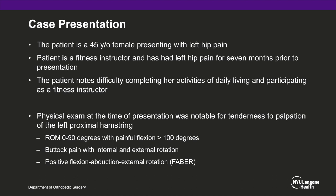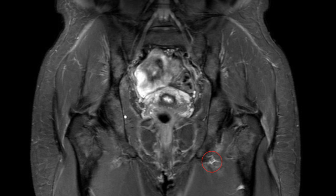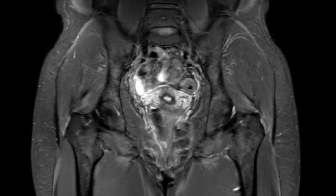The patient in this case is a 45-year-old female presenting with left hip pain. She is a fitness instructor and has had left hip pain for the past seven months. She has difficulty completing activities of daily living. Physical exam was notable for tenderness on palpation of the left proximal hamstring, range of motion 0 to 90 degrees with painful flexion greater than 100 degrees, buttock pain with internal and external rotation, and a positive Faber test. MRI demonstrated a high-grade partial thickness tear of the proximal hamstring tendon with tendon separation from the ischial tuberosity.